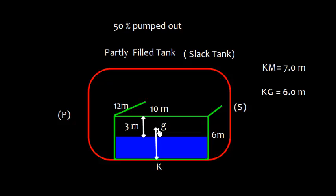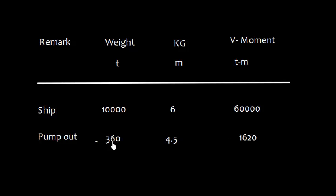Now, we pump out 360 ton and the KG was 4.5 meter. Let's go back to have a look. Here the KG, this one is 1.5 and this is 3 meter because this value is 3 meter here. 3 meter plus 1.5 meter which is, let me just mark here which is this one. This is 1.5. The total value is 4.5 meter.